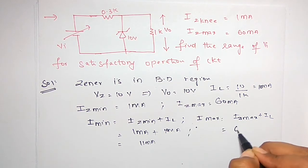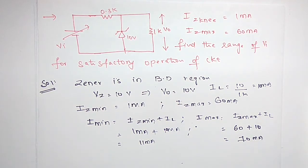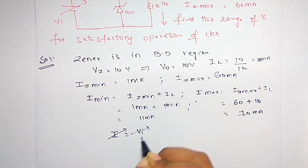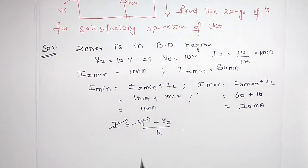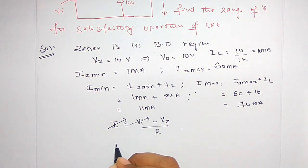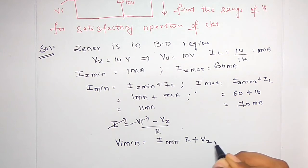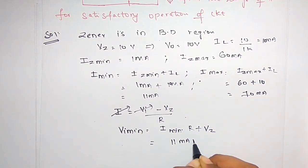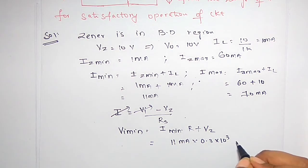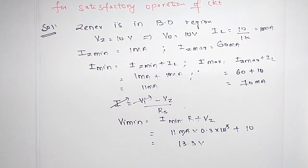Maximum current is 60 plus 11 equals 70 milliamps. The variable current formula is VI minus Vz divided by R. Current is minimum when input voltage is minimum. Therefore, VI minimum equals I minimum into RS plus Vz. I minimum is 11 milliamps, RS is 0.3 kilo ohms, plus Vz is 10. So 11 milliamps times 0.3 kilo ohms plus 10 equals 3.3 plus 10 equals 13.3 volts.